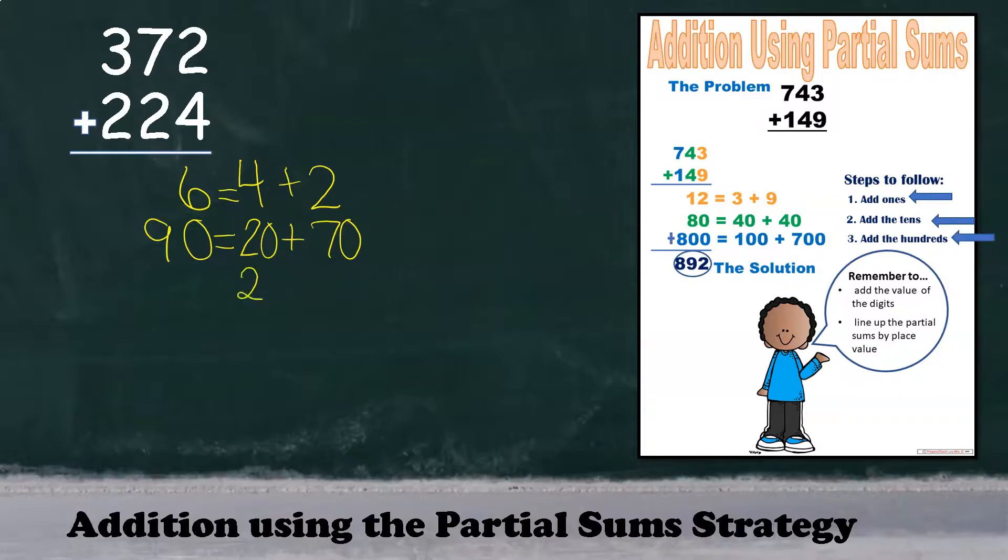Hundreds place, we're going to add two hundreds plus three hundreds, giving us a total of 500. Now we're ready to combine our partial sums, leaving us with a total of 596.